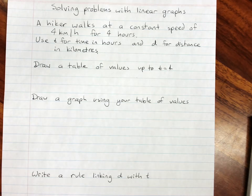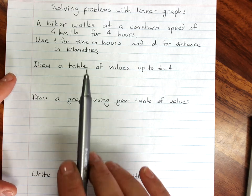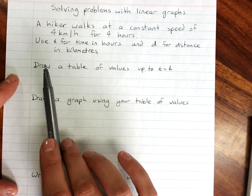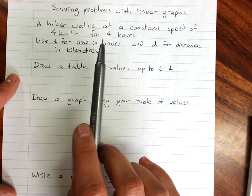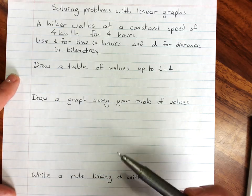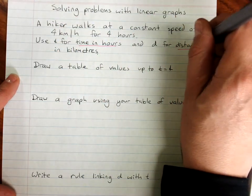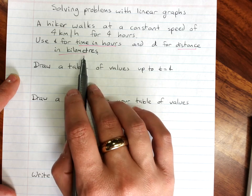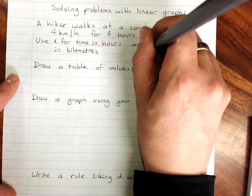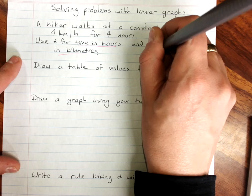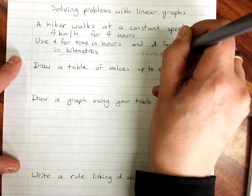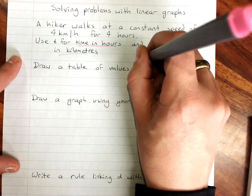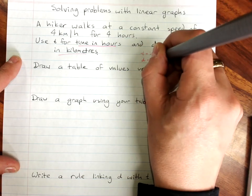Now any time we get a word problem, what you need to look at is what are your dependent and independent variables. And the easiest way to do that is to ask which one depends on the other. So I've got time in hours and distance in kilometers. Now there's a trick with distance and time.